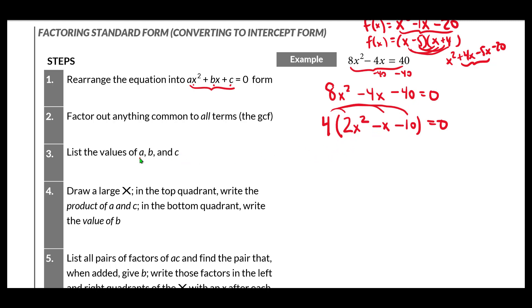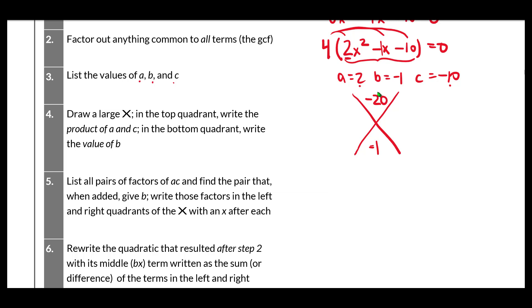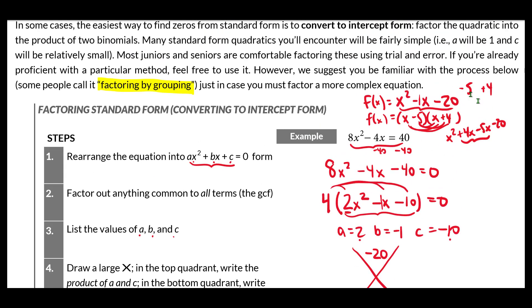I'm going to list the values of a, b, and c in the simplified quadratic. So a equals 2 — the coefficient of the quadratic term. b equals negative 1 — the coefficient of the linear term. And c equals negative 10 — the constant term. Now I'm going to draw an X. In the top quadrant I write the product of a and c: 2 times negative 10 is negative 20. In the bottom quadrant I write the value of b, which is negative 1. The next step is to list all pairs of factors of a·c and find the pair that when added gives me b.